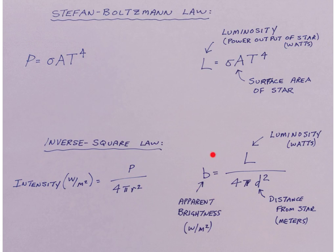It's exactly the same thing for stars, except now instead of intensity, we call it apparent brightness. It's still measured in watts per square meter. Instead of using the power, we use the luminosity, which of course is the power output of the star.